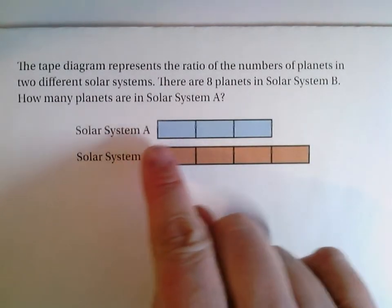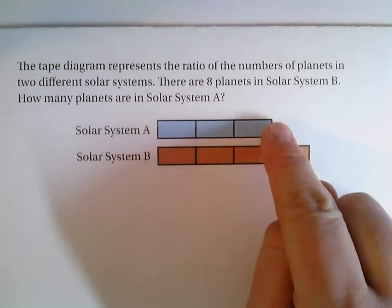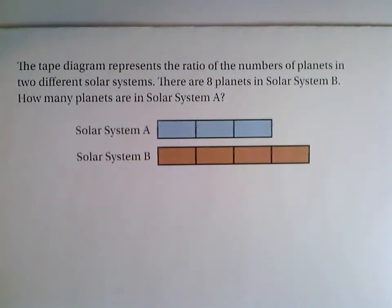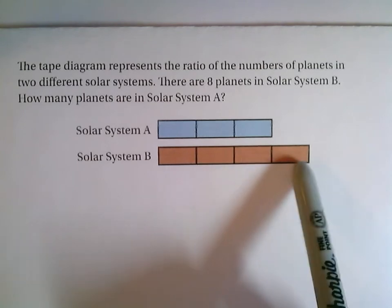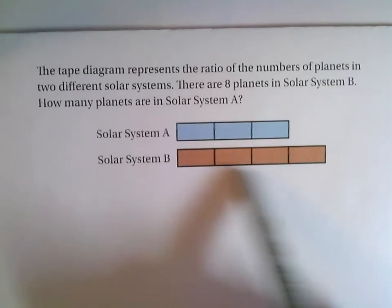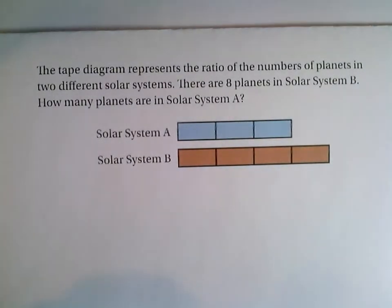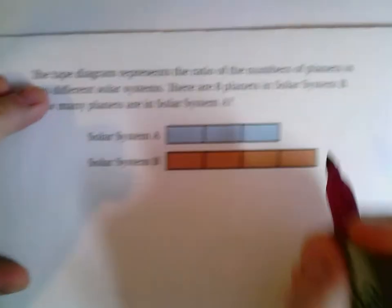So we know these, so we see here that we have three pieces, three parts for solar system A for every four parts for solar system B. And we know that these four parts equal eight.